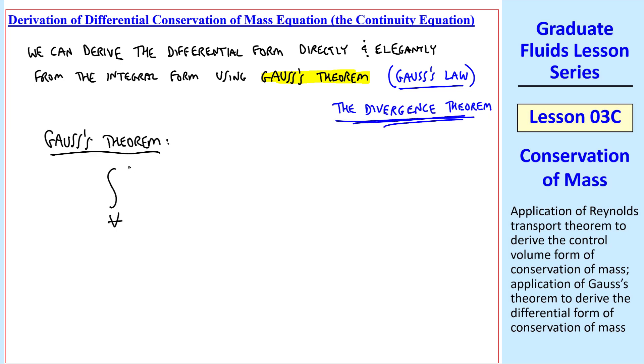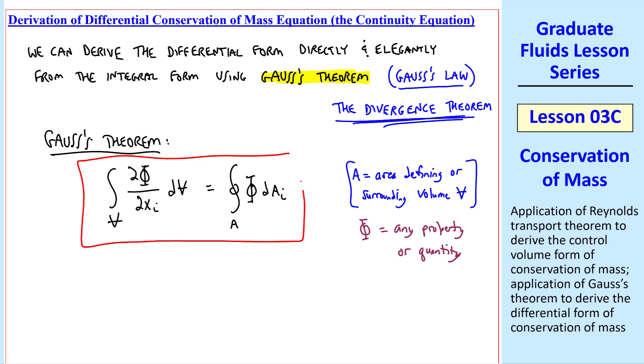In tensor notation, Gauss's theorem is that the volume integral of del phi del xi, where phi is some function, dv, equals the integral over a closed area of phi dai, where a is the area defining or surrounding volume v. Notice again the circle, meaning that it's the entire area that defines volume v. And phi can be any property or quantity. We will apply Gauss's theorem many times in this course.